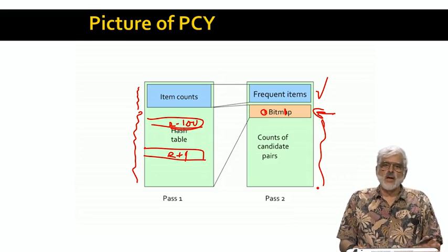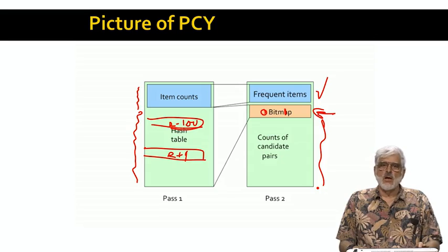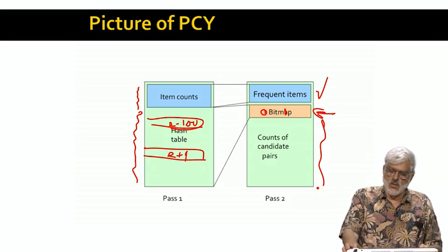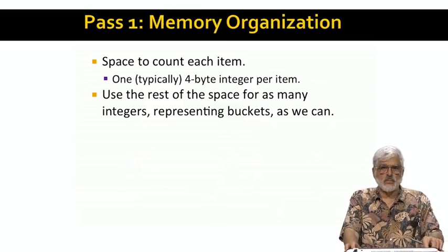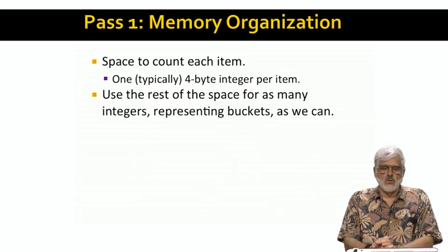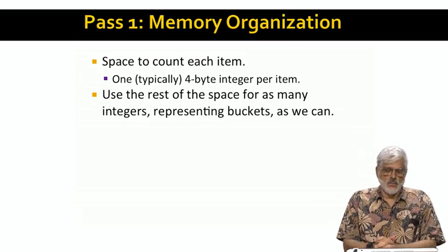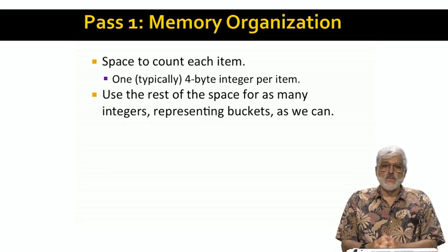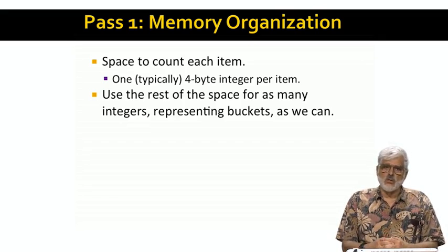We hope that the bucket counts will eliminate most of the candidates that A Priori would have to handle, so there will be many fewer pairs to count on the second pass. If that is the case, the PCY algorithm might be able to operate in main memory on the second pass, while A Priori would run out of space or have to use disk. On pass one, we use whatever space we need to count the occurrences of each item — typically four bytes per item. The remaining space goes to as large a hash table as we can manage, where each bucket is a count, also typically a four-byte integer.